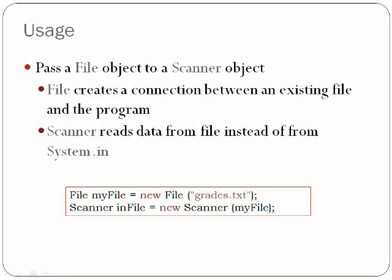Pass a file object to a Scanner object. File creates a connection between an existing file and the program. Scanner reads data from the file instead of from System.in. An example shows how to incorporate this in your program. File myFile equals new file of your text file. Scanner inFile equals new scanner, and you pass myFile to scanner.